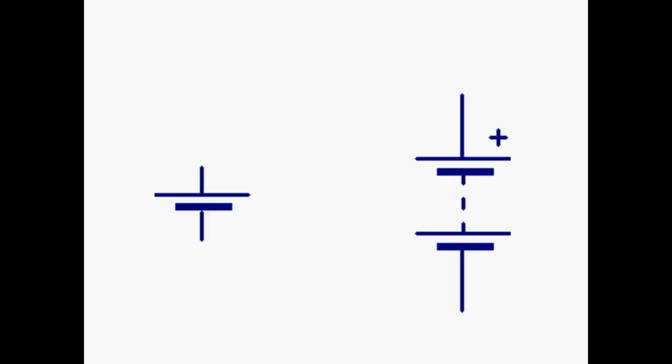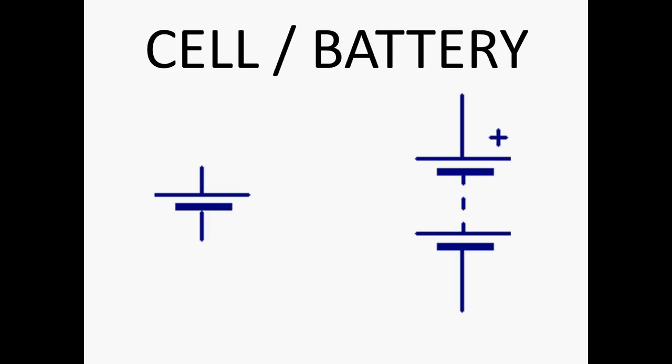On the left is a cell and on the right is a battery. Obviously a battery is made up of two cells, that's why you've got twice the picture. The only labels you've got to remember are anode and cathode, positive and negative.